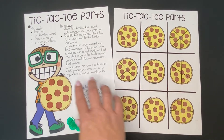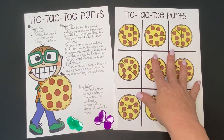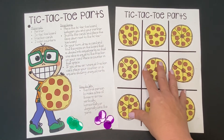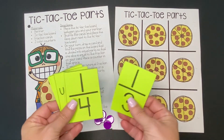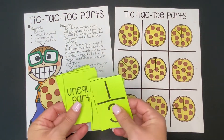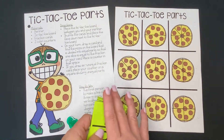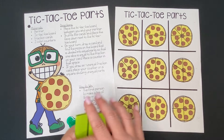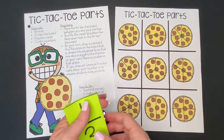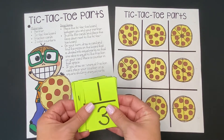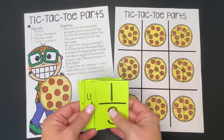To play this game you'll need a partner, you'll need this pizza tic-tac-toe board, and you'll need these fraction cards. Some of them say unequal parts, because what we're looking at today is how many equal parts something is divided into, or if it's unequal parts.